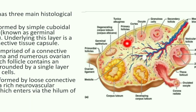By the time of birth, the number reduces to about one million, with the rest degenerating. By puberty, the number of follicles further reduces to around three to four hundred thousand. After menarche, during each menstrual cycle only one follicle matures and releases its ovum from either the left or right ovary — both ovaries do not ovulate at the same time, it is on alternate sides.